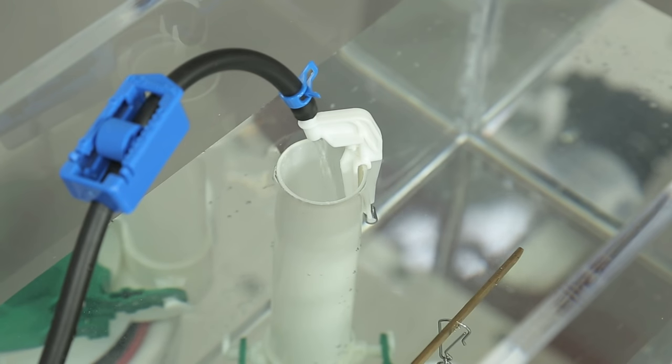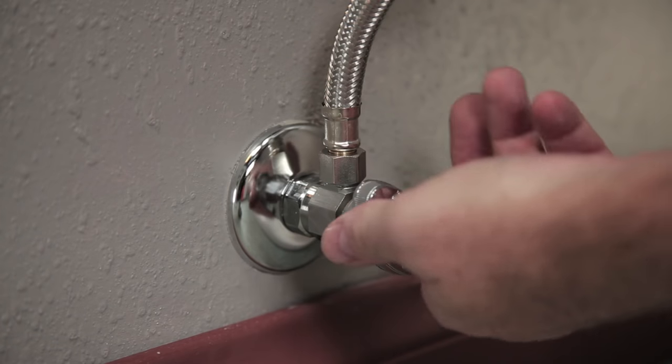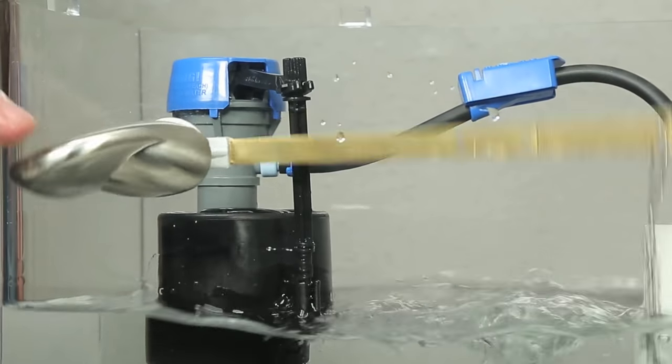If your fill valve continuously runs and does not turn off, you may need to flush debris out of the valve. To do this, you must remove the cap assembly. First, turn off the water shutoff valve. Flush the toilet.